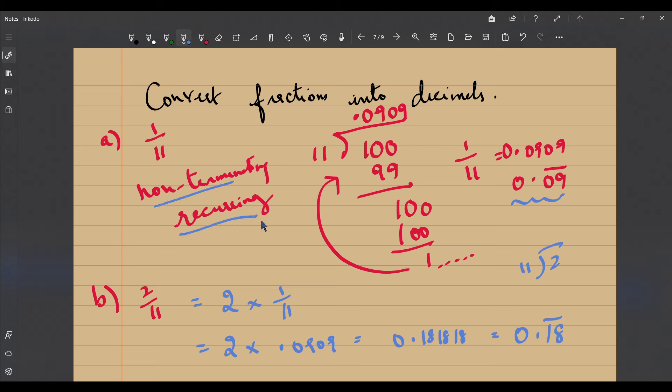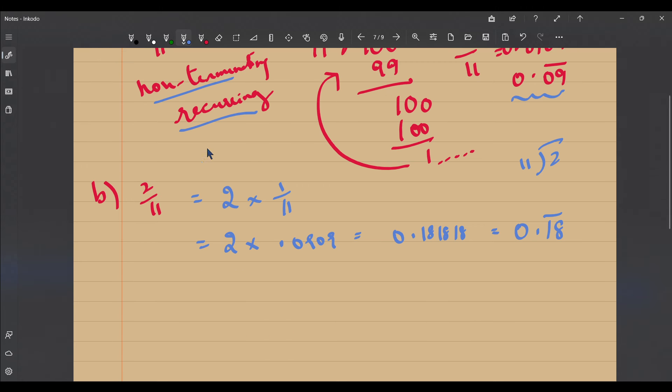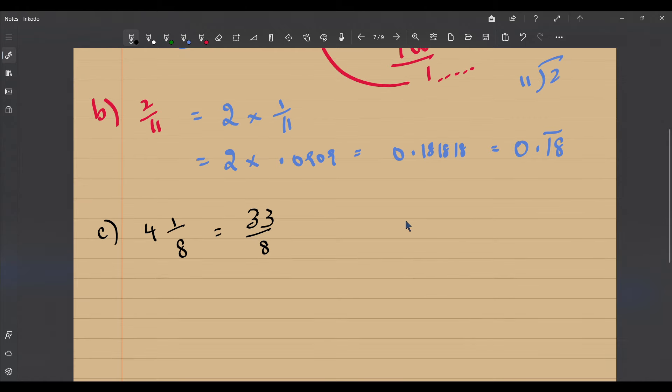Now let's try a mixed number - let it be 4 and 1 by 8. So converting it into an improper fraction you get 8 fours 32, 32 plus 1, 33 by 8. So dividing 33 by 8 - for once we have a bigger number to be divided by 8. So 8 fours 32.